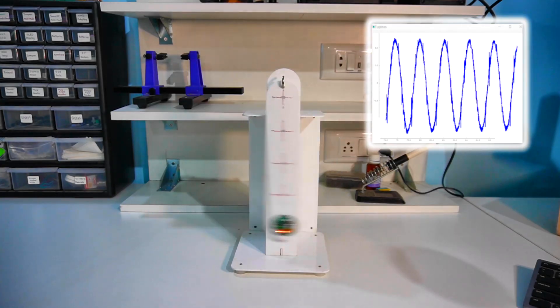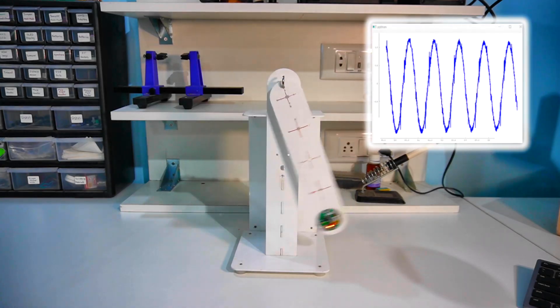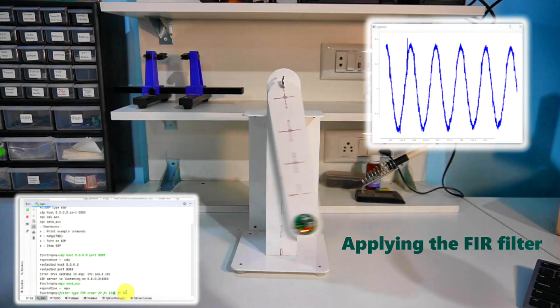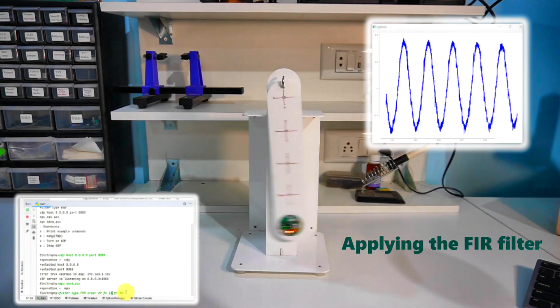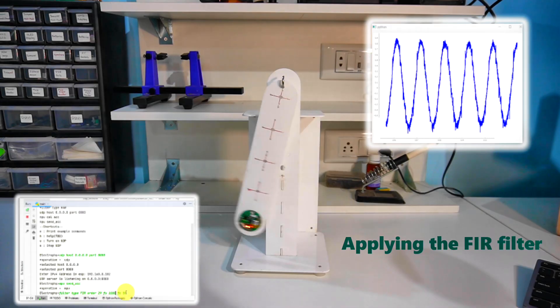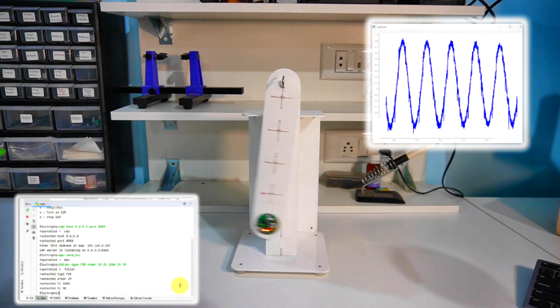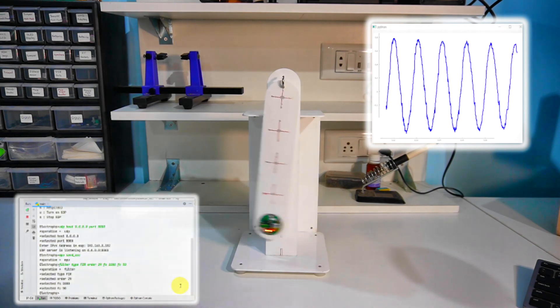So, let's apply a FIR filter to smooth out the curves. We will set the filter order to 29, the sampling frequency to 1 kHz, and the cut-off frequency to 50 Hz. Now most of the noise is filtered out.